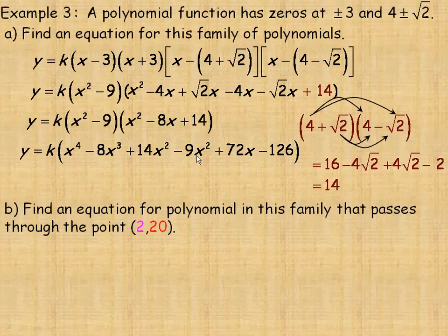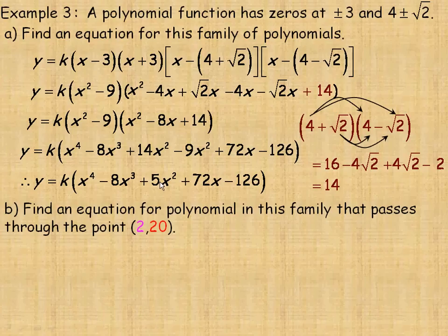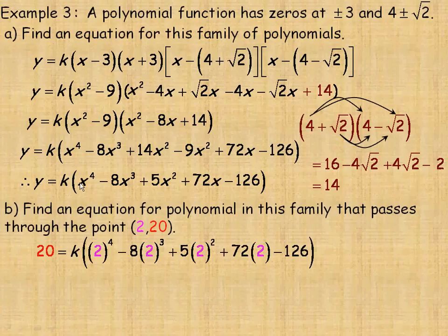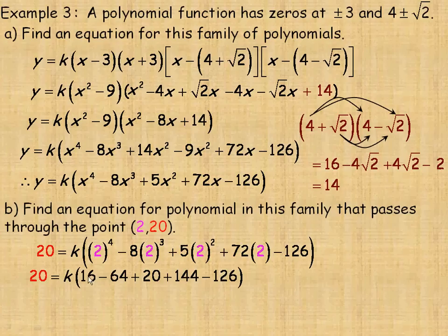In part b, we're asked to find the equation for the polynomial that passes through the point (2, 20). We substitute 20 for y and 2 for x everywhere. Simplifying: 2 to the 4th is 16; 8 times 8 is 64, so minus 64; 4 times 5 is 20; 72 times 2 is 144; and minus 126. Adding all five numbers gives negative 10. So negative 10k equals 20, meaning k equals negative 2.